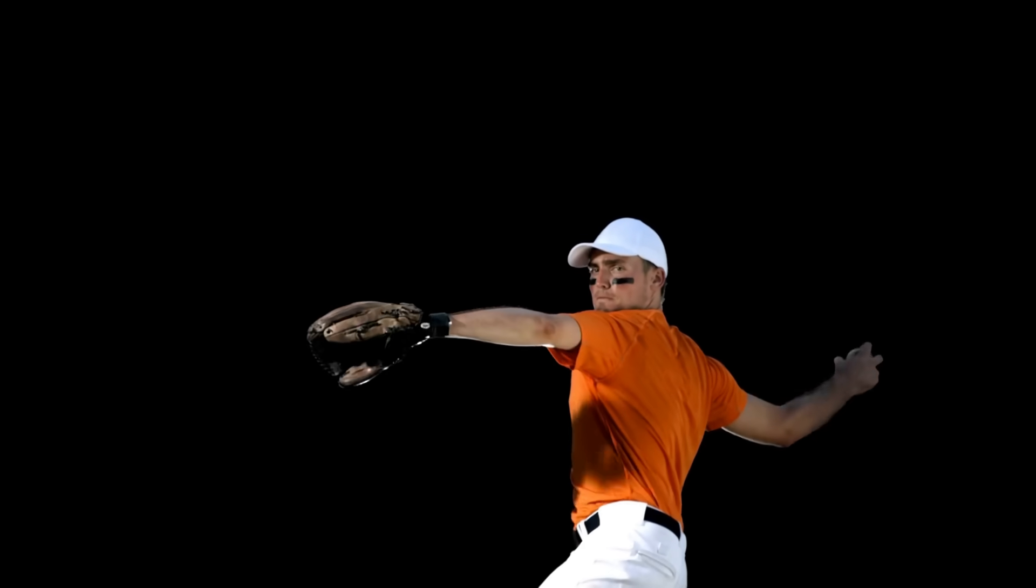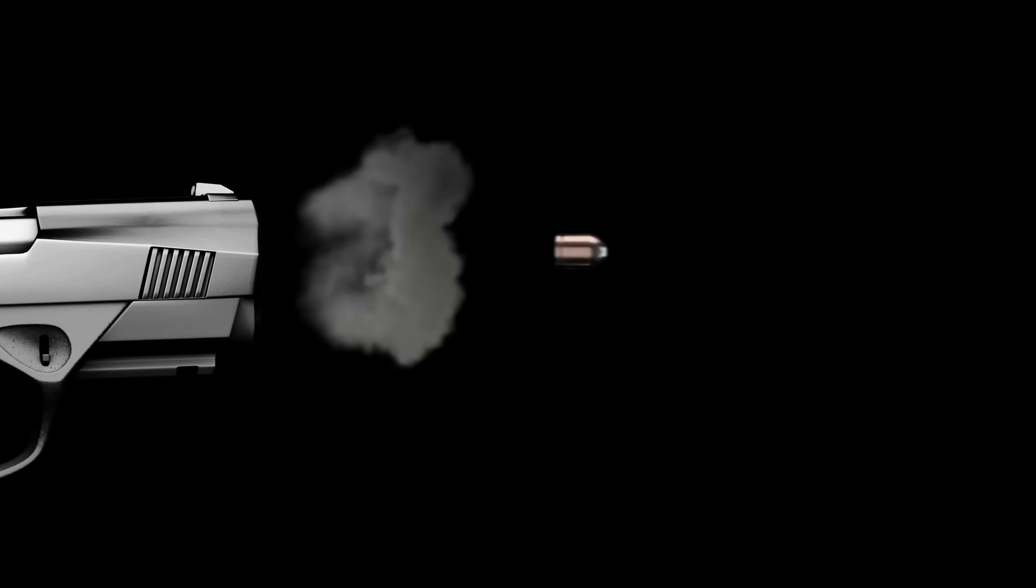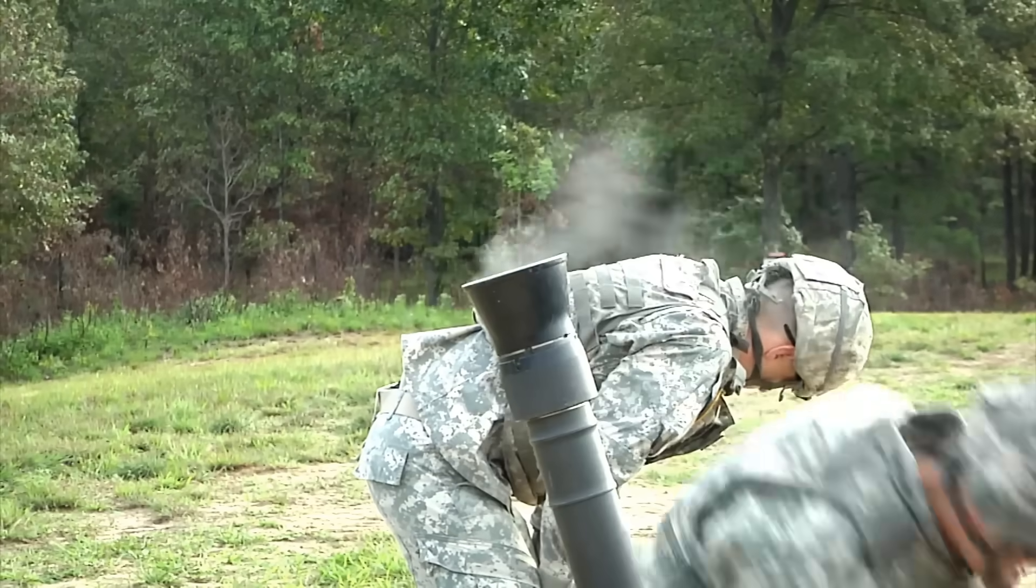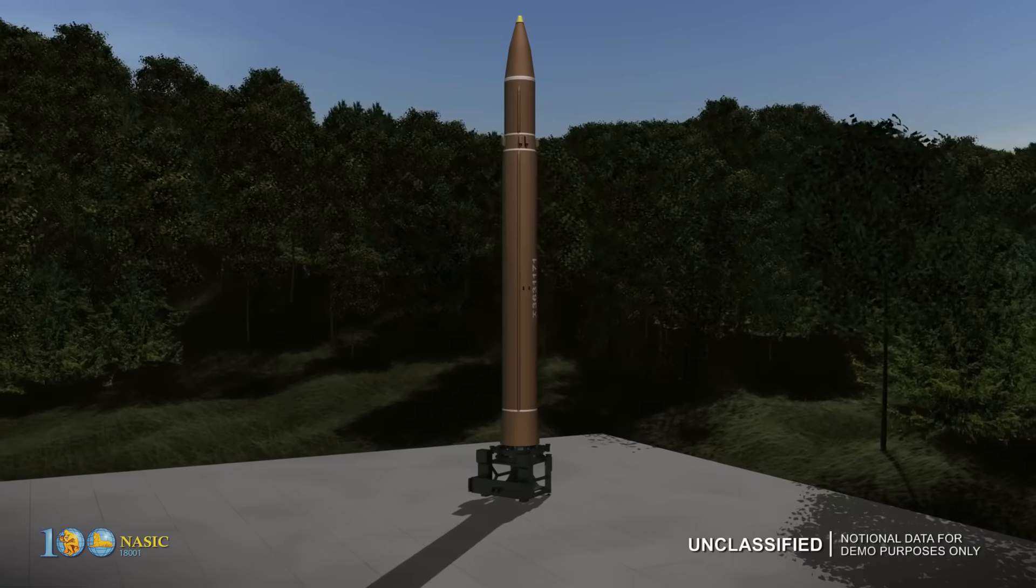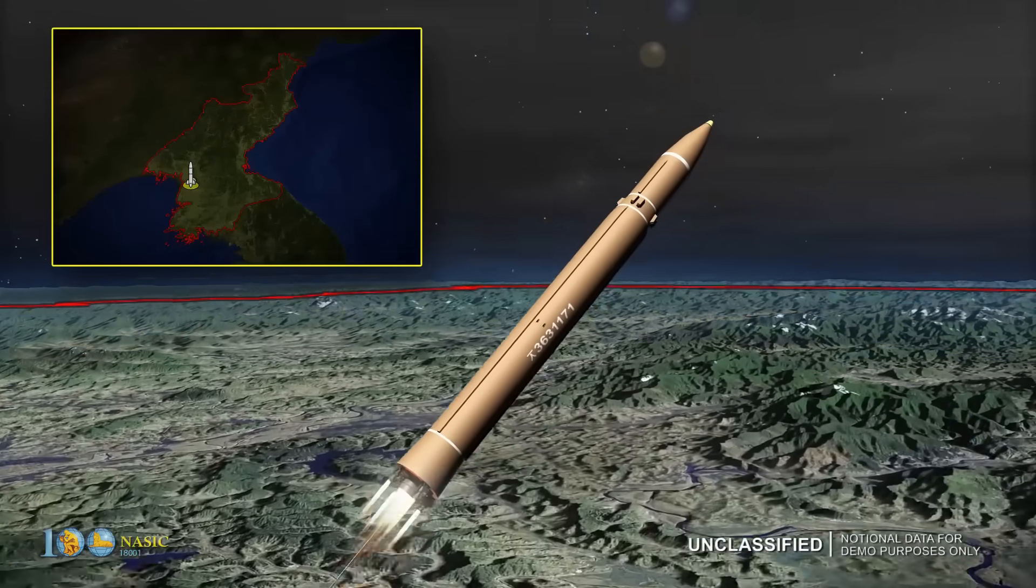When we throw a ball, our hand provides the initial speed. In the case of a gun, the initial thrust comes from the pressure when the bullet is fired. For a cannon, it's the same principle. But for a ballistic missile, the initial thrust is provided by a rocket engine. That is the main difference.